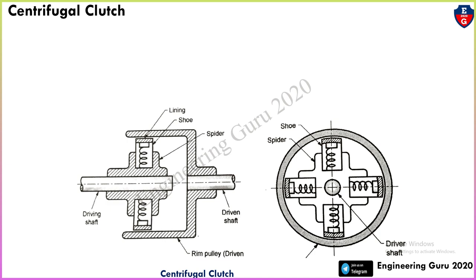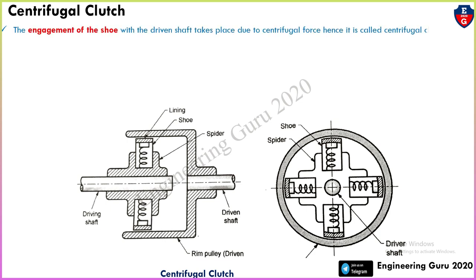The engagement of the shoe with the driven shaft takes place due to centrifugal force — that's why it is called a centrifugal clutch. Here, this is the shoe and this is the lining. Centrifugal force applies in the outward direction, and due to this, engagement is possible.